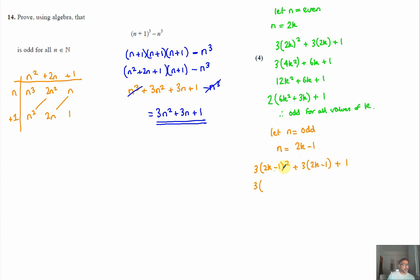Expanding this out, expanding that double bracket out, I'm going to write it out fully just to be thorough. And then expanding and simplifying, that gives me 4k² - 2k - 2k gives me -4k, minus 1 times minus 1 gives us plus 1, plus 6k - 3 plus 1.